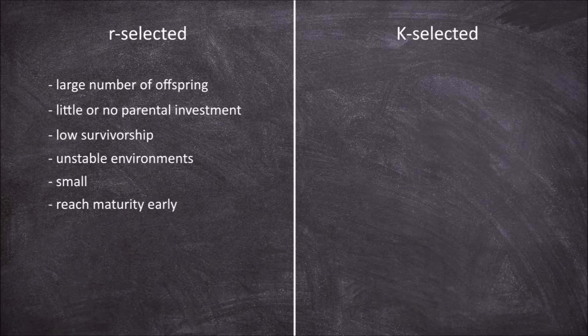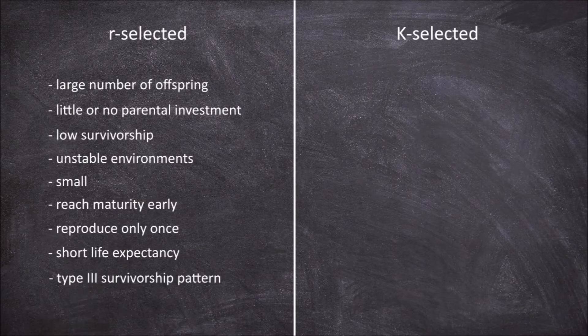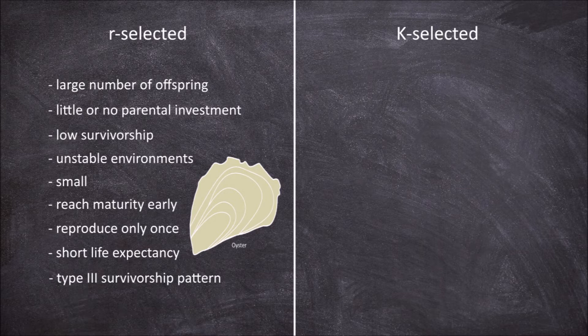R selected species usually reach maturity early and often only reproduce once in their lifetime. They also have short life expectancies and show a type 3 survivorship pattern where most die quickly but a few survive longer. An example of an R selected species is oysters. Oysters produce hundreds of millions of fertilized eggs out into the ocean where they provide no parental care. They are small and most don't survive very long due to the unstable rough waters and high levels of consumption by consumers.